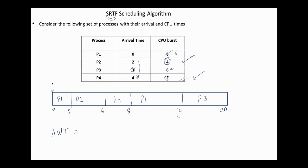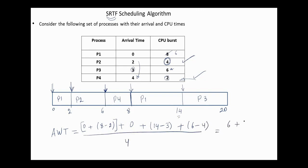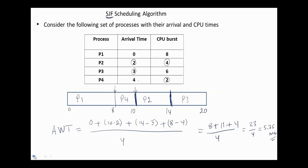The average waiting time for SRTF is calculated as follows. Process 1 waits here and here — it waits 8 minus 2. Process 2 does not wait at all. Process 3 waits 14 minus its arrival time of 3. Process 4 waits 6 minus its arrival time of 4. This equals (6 + 0 + 11 + 2) / 4 = 4.75 milliseconds, which is better than the shortest job first result of 5.75 milliseconds.